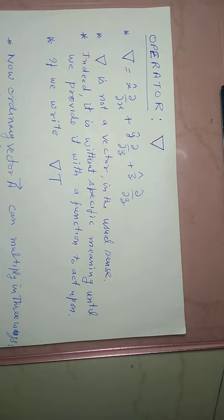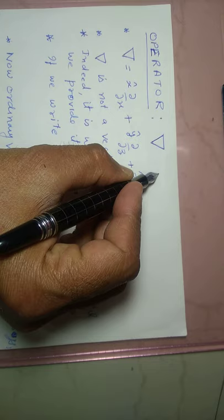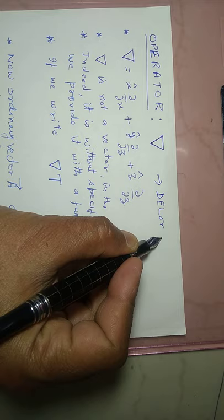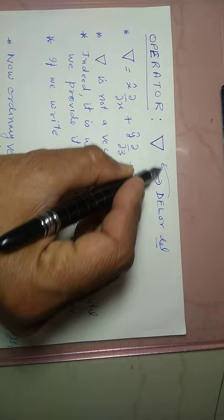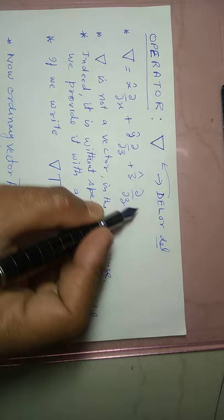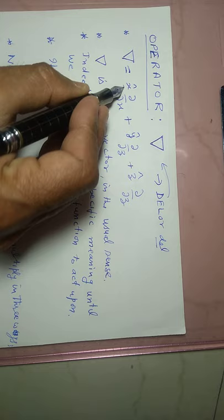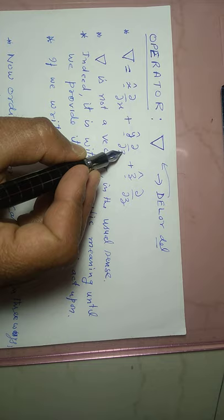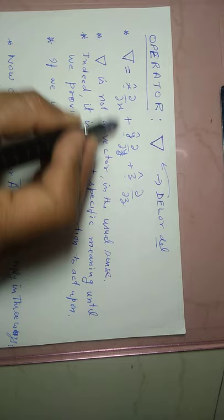In this video we will discuss the operator used in electromagnetism. We will call it del, and we can represent this del operator with the symbol of an inverted triangle. Mathematically, we can write the expression for this del operator as the sum of unit vectors x-hat, y-hat, z-hat multiplied by the partial derivatives curly/curly-x, curly/curly-y, and curly/curly-z.